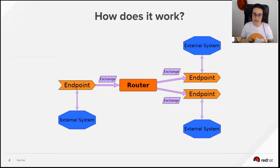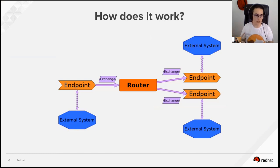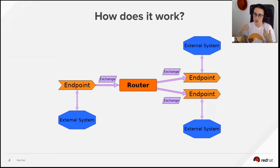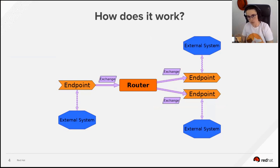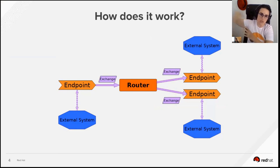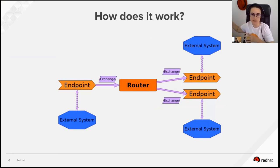Apache Camel has different endpoints specialized in connecting to external systems — databases, Twitter, Facebook, LinkedIn, whatever. When an endpoint interacts with an external system, it generates a datagram called an exchange — a message that carries the response plus headers and context attributes. This message goes to the router, which decides the next step and sends it to the next endpoint, which interacts with the next external system, and so on until the flow finishes.